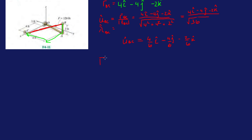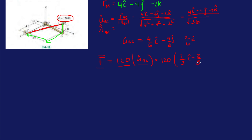Now, in order to get the actual force vector in Cartesian coordinates — because we were given just a magnitude — we're going to redirect that 120 pounds into its different directions by multiplying with the unit vector. So it's the force times the unit vector — a scalar multiplied with a vector gives you back a vector. So we're going to do 120 times the unit vector, giving us components of 2/3, minus 2/3 j, and minus 1/3 k.